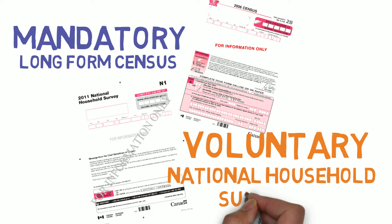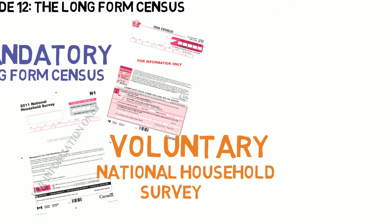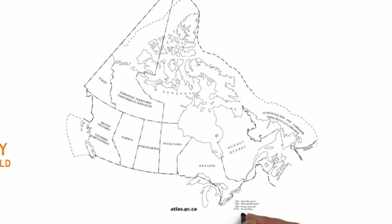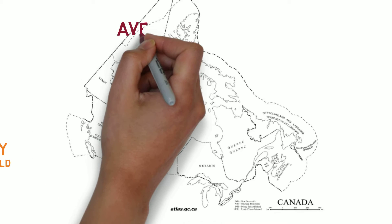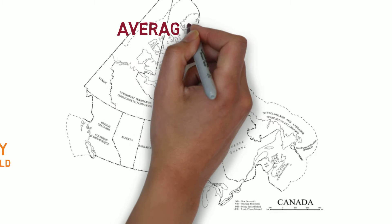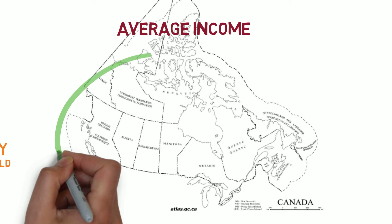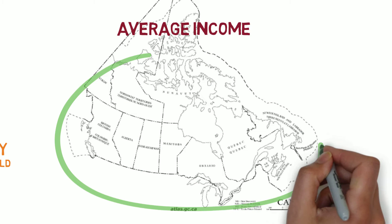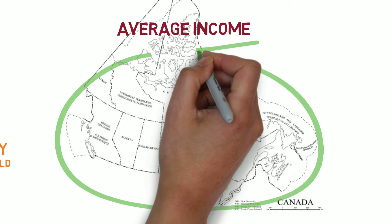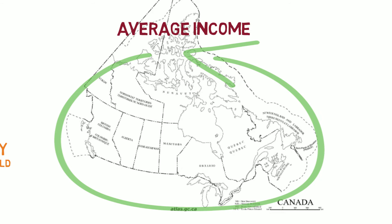Why is the distinction between voluntary and mandatory important? It is useful to consider an example. Suppose that we are interested in knowing the value of mean income for the whole adult population of Canada. The most accurate way to proceed would be to get the incomes of every adult and then average them.